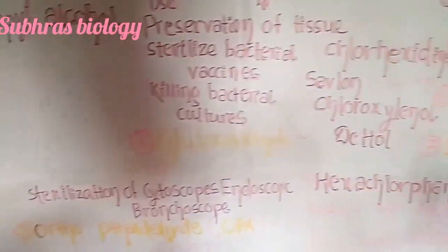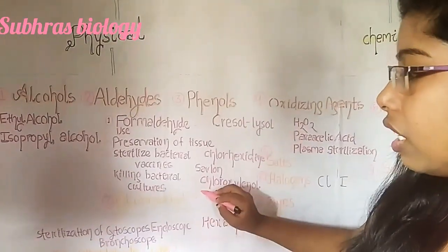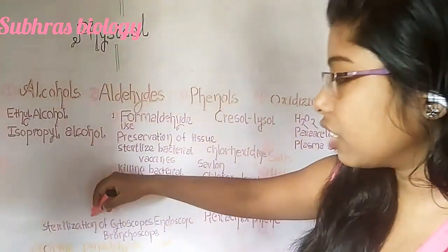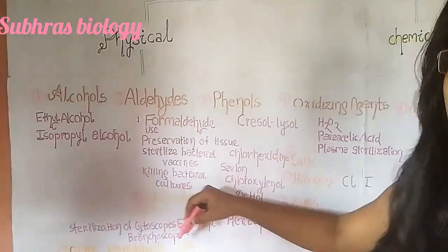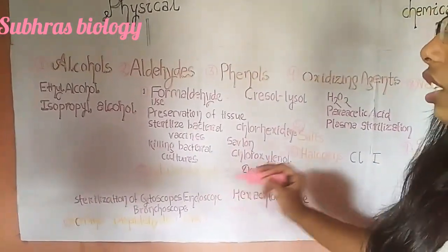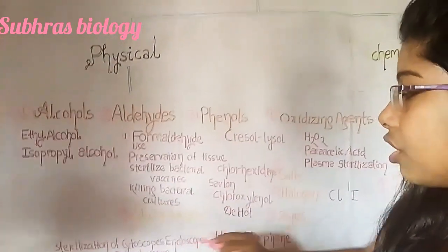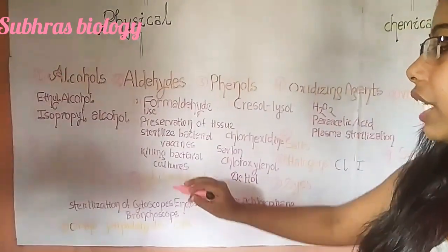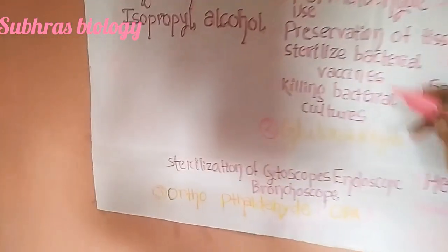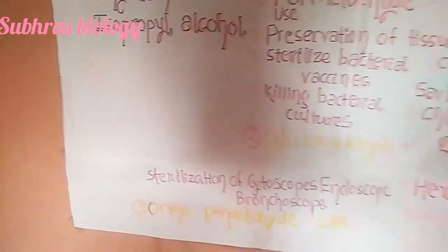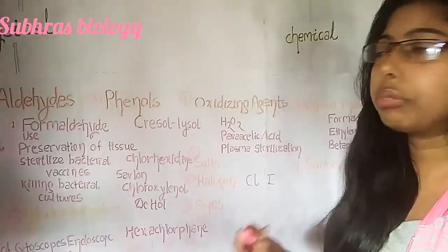Glutaraldehyde is mainly more effective against gram-positive bacteria than gram-negative bacteria. Its main use is sterilization of cystoscopes, endoscopes, and bronchoscopes. The third aldehyde type is orthophthalaldehyde (OPA). These three — formaldehyde, glutaraldehyde, and OPA — are the aldehydes used for sterilization of any surface or medium.